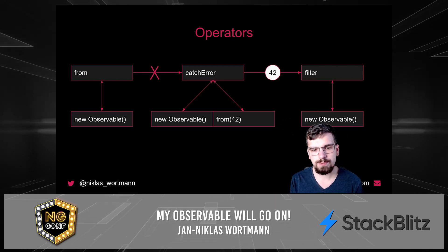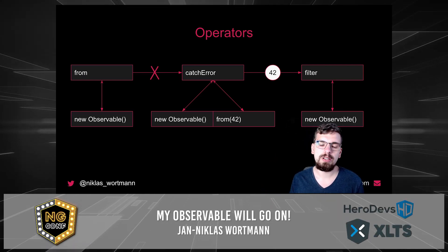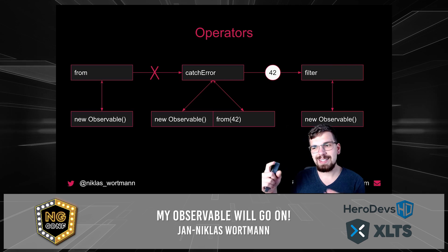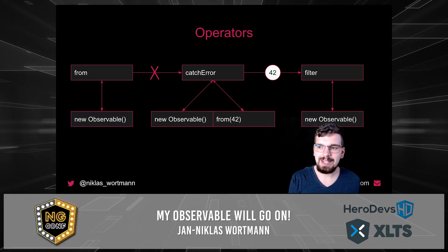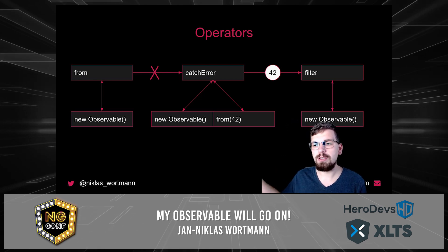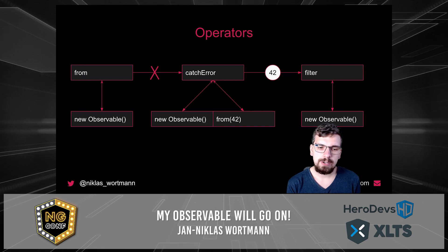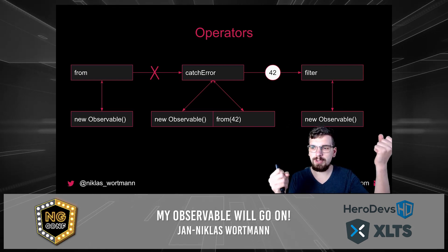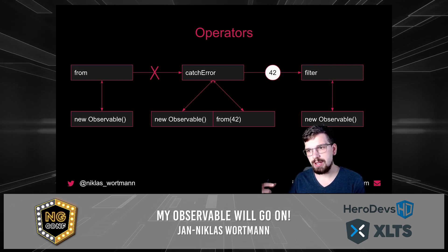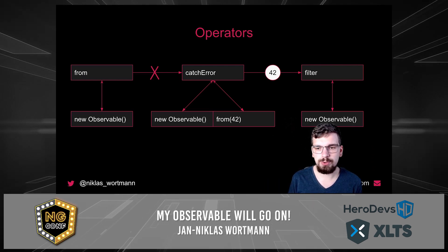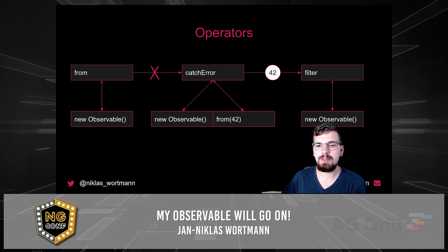How catchError works is you return a new observable in that function, but this new observable is only triggered in case of an error. It will still return a new observable instance just from the operator itself. In case of an error, it will replace the old observable — the one that errored — with a new one, which in our case returns 42 and can then be processed by the filter operator.